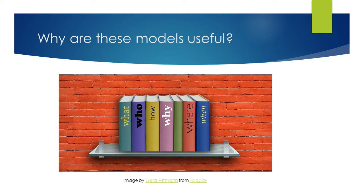So how are these models relevant to people involved in supporting injured sport and exercise participants? They're useful in helping us to understand how and why individuals might respond in a particular way following injury, which might help us to identify appropriate interventions to prevent or minimise psychological difficulties. Additionally, we can look at the models and identify factors that are within our control that can have a positive influence on the injured person's recovery, such as social support.